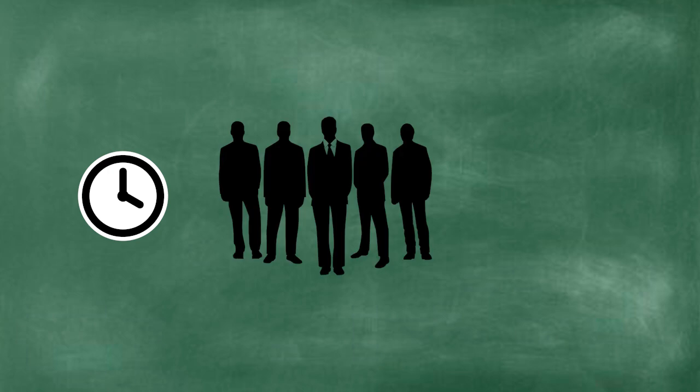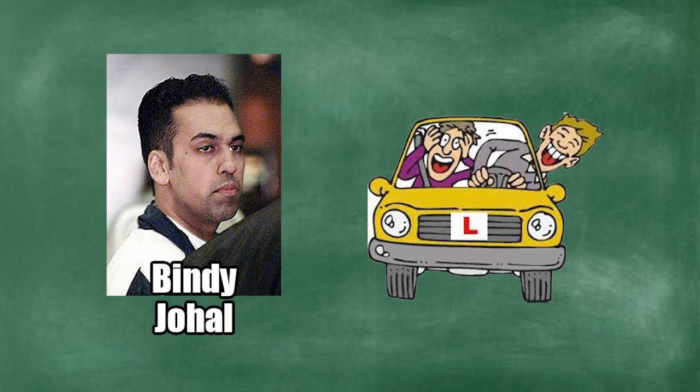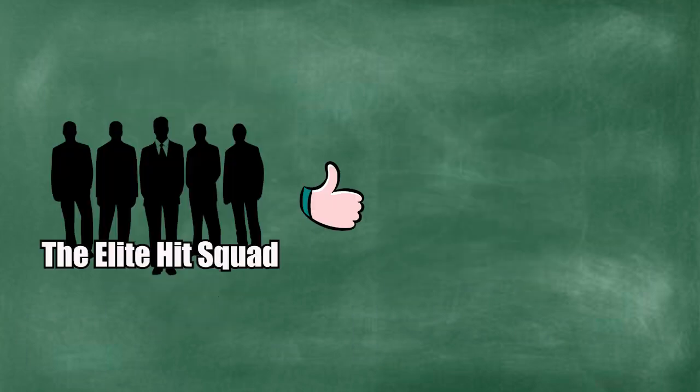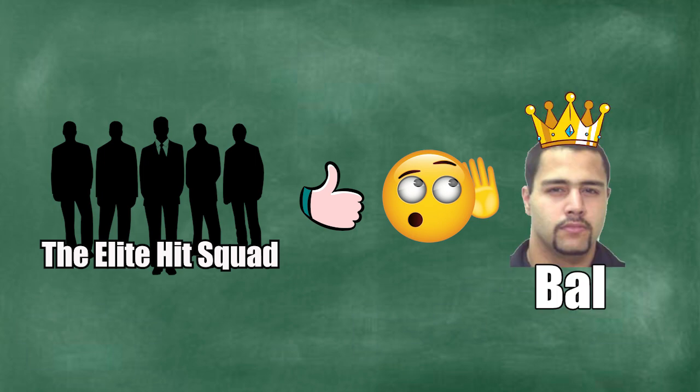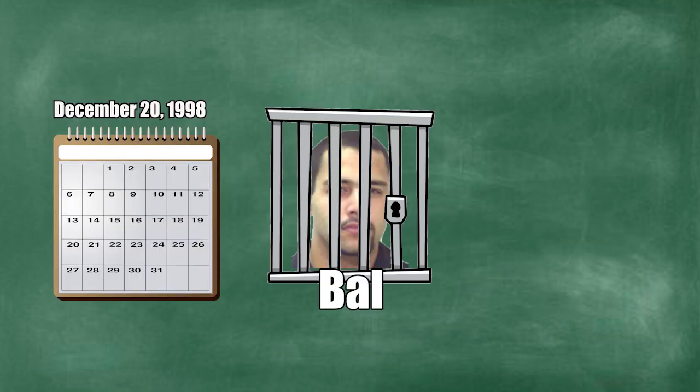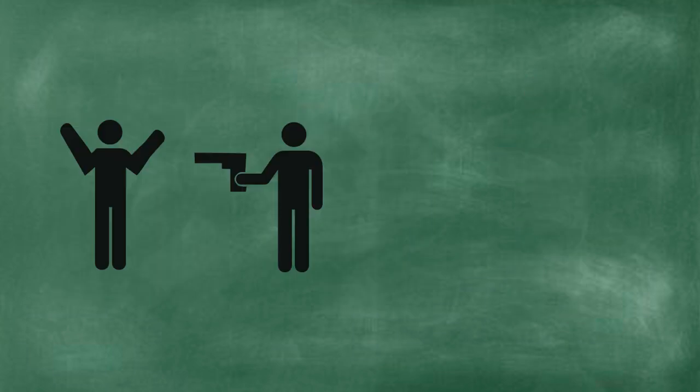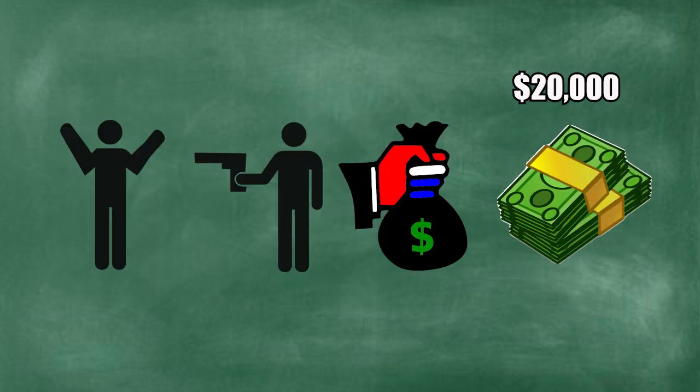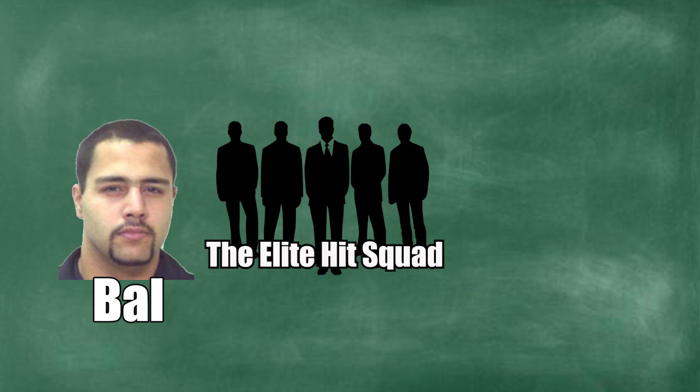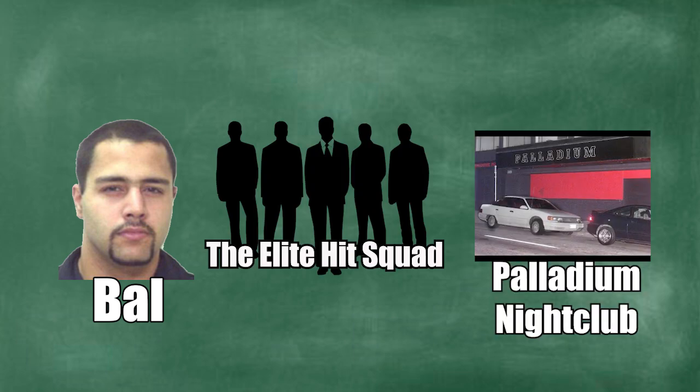At the time, the elite hit squad distrusted Johal because of his recklessness. They now favored and listened to Bal as their leader. On December 20, 1998, while behind bars, Bal ordered for Johal's assassination and paid $20,000 for the job. According to Bal, it was the elite hit squad that got him at the Palladium nightclub.